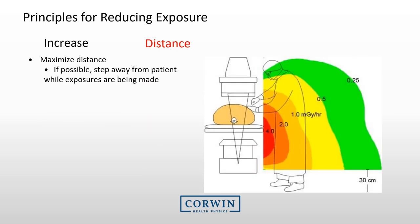Another easy way to reduce your radiation exposure is to increase your distance from the radiation source. The x-ray tube is on the bottom of the patient and the imaging surface is above. When the x-ray tube fires, radiation scatters in all directions in an inverse square pattern. If you stand just a few feet back, radiation exposure levels drop off significantly. We encourage you to stand a few feet back whenever possible, as long as you can still provide necessary patient care.